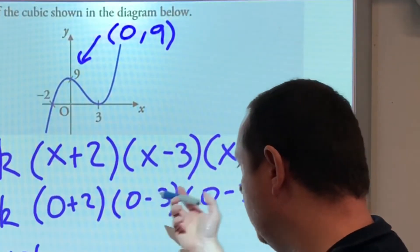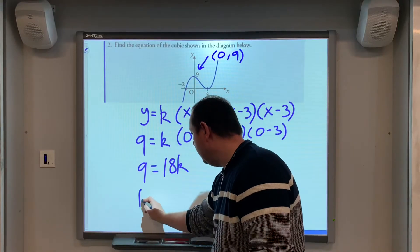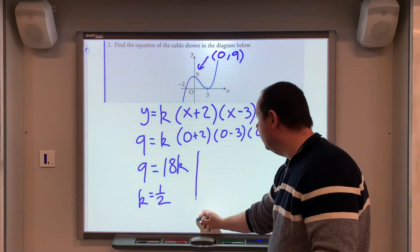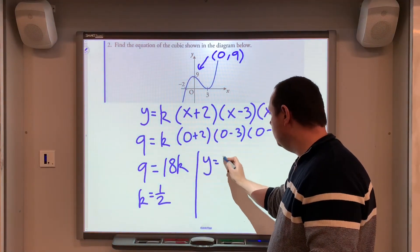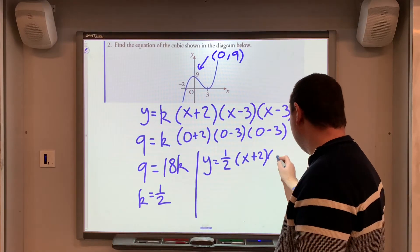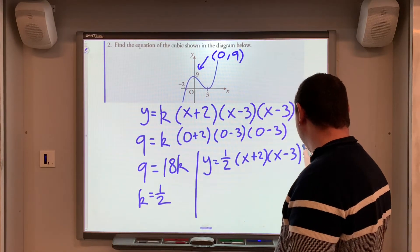18 upon k. Double minus makes it positive, so k, in this case, is a half, so our final solution, y equals a half of, x add 2, x minus 3, and I might as well write that squared.